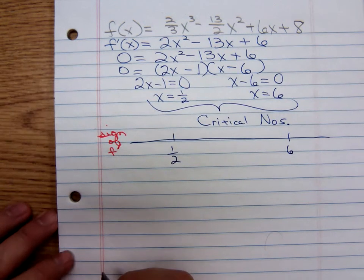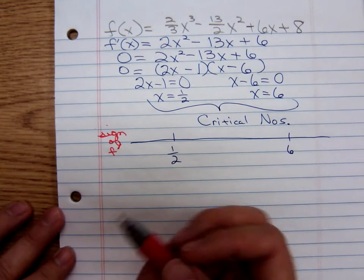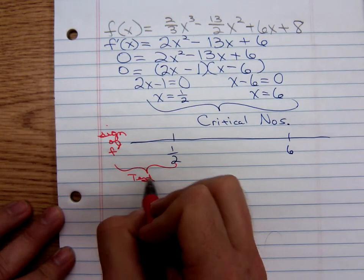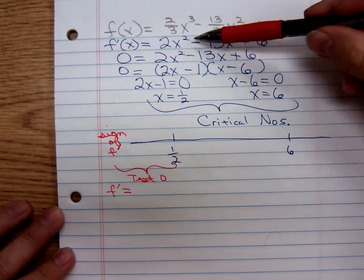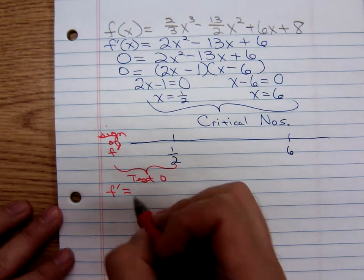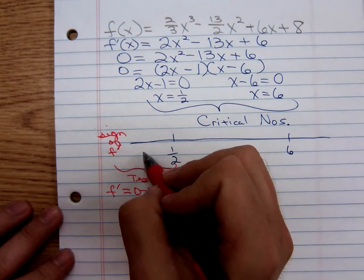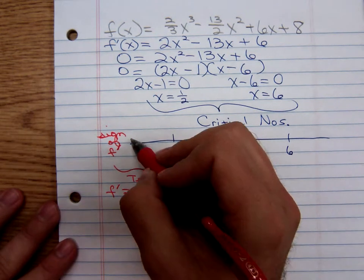And then I would test intervals. To the left of one-half, I can use any number I want to. I would test something easy like zero. Plug zero into the derivative. That's going to give me zero minus zero plus six. That means the derivative is positive, so the function is increasing.